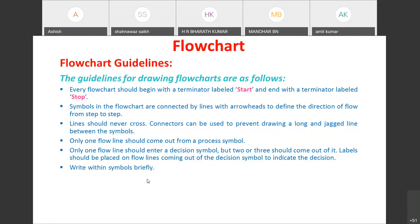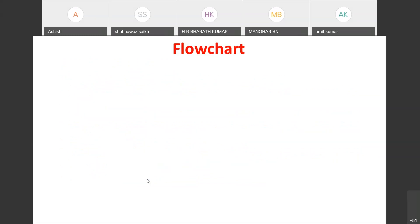Labels should be placed on the flow lines coming out of the decision symbol to indicate the decision outcome — for example, true or false. Write only brief statements within each symbol. Symbols may be drawn of any size; only the shape is standard. Use the correct standard symbol for each operation — parallelogram for input/output, rectangle for processing.